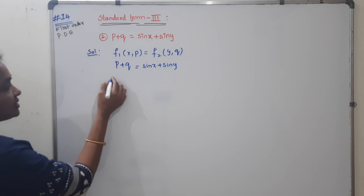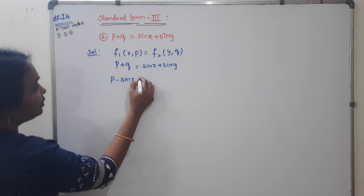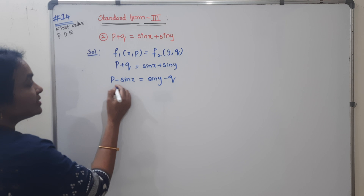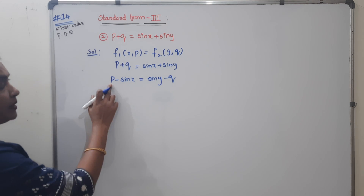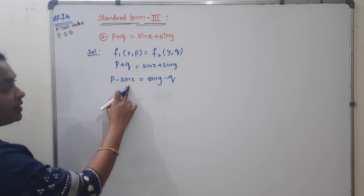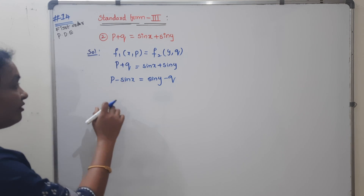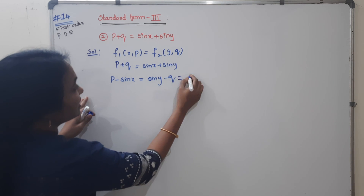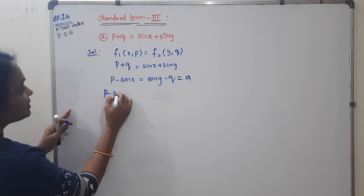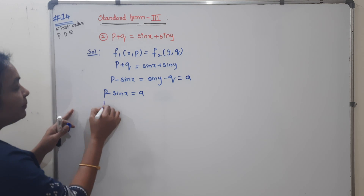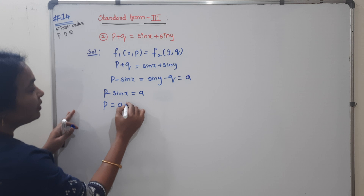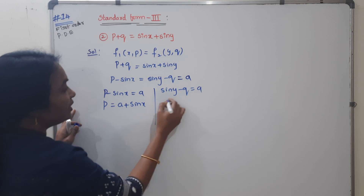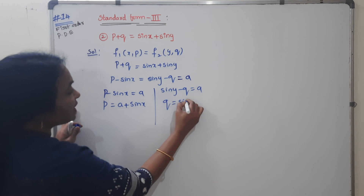Take X to this side: P minus sin X equals sin Y minus Q. Consider this as one function equal to constant A. From here, P minus sin X equals A, so P equals A plus sin X. And sin Y minus Q equals A, so Q equals sin Y minus A.